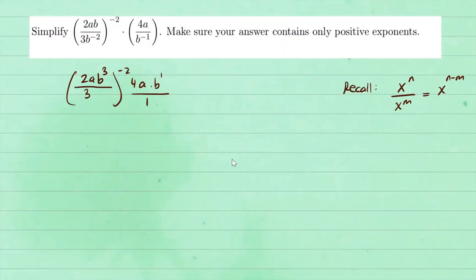Now let's go ahead and distribute the exponents to everything we have inside this parentheses right here. So this will give us 2 to the negative second power, a to the negative second power, b to the 3 to the negative second power.